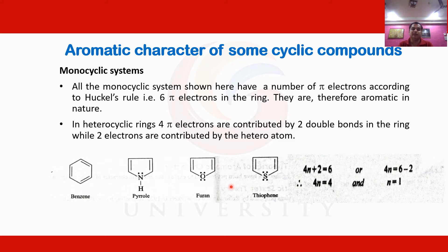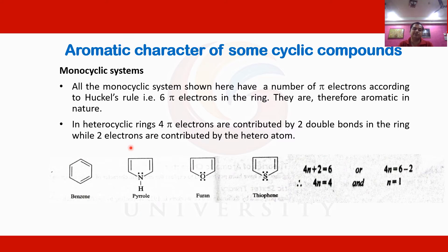All monocyclic systems shown here must follow Hückel's rule condition — they must have a 4n+2 pi electron system. In benzene, there are three pi bonds meaning six pi electrons. Applying the 4n+2 rule: 4n+2 = 6, so 4n = 4, meaning n = 1, an integer value. That is why benzene is aromatic in nature.